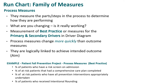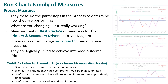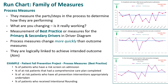Using the example of the patient fall prevention project, the process measures relate to best practice and are also the primary drivers in the driver diagram. They look at the percentage of patients who have a risk screen on admission, the percentage of at-risk patients that had a comprehensive care plan completed, the percentage of at-risk patients who have all prevention interventions appropriately undertaken, and the percentage of patients who received intentional rounding. On the right, we have some charts that demonstrate some of those process measures.